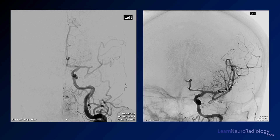Here we have some images from an angiogram — a frontal angiogram. You have the internal carotid artery coming up, bifurcating into the left ACA and left MCA. And here, out of the distal M1 segment, you have a truncation — an occlusion of an M1 branch there right in the sylvian fissure.